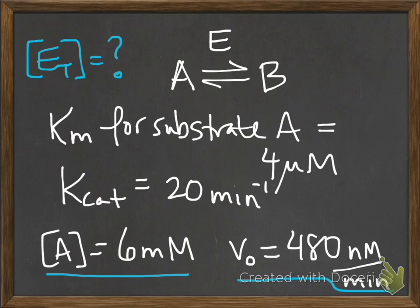There are two ways to do this problem. One way is you plug in the numbers into the version of the Michaelis-Menten equation that I showed you in class that allows you to solve for total enzyme concentration. But if you look in the solutions, there's a shortcut.